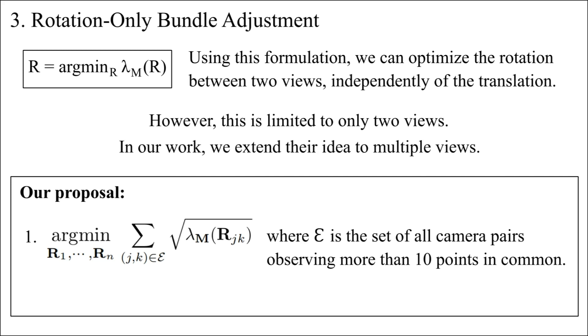First, we formulate our optimization problem as shown here. We compute lambdas for all existing camera pairs observing more than 10 points in common. Then we take the square root of each and add them up. This is the cost function we try to minimize, and our state consists of the global rotations of all cameras.